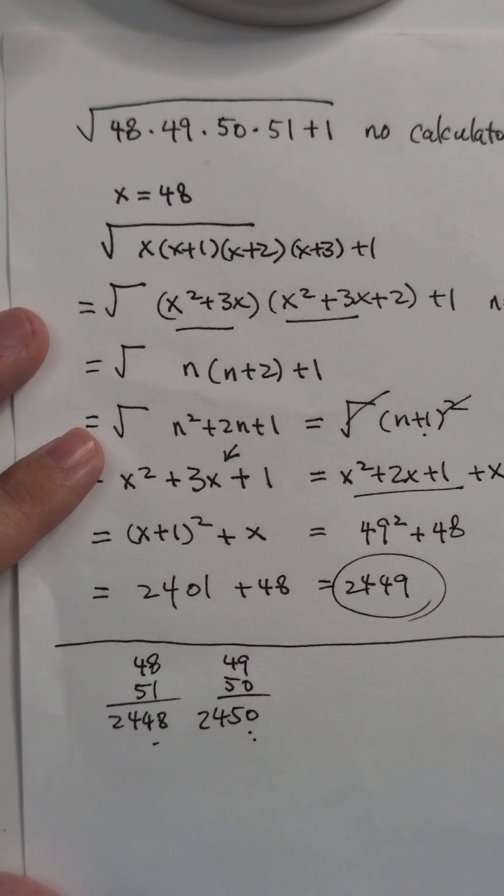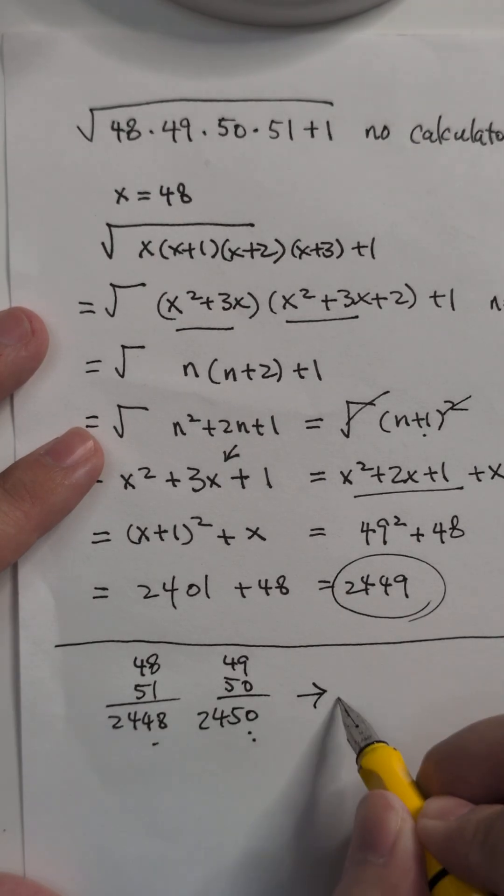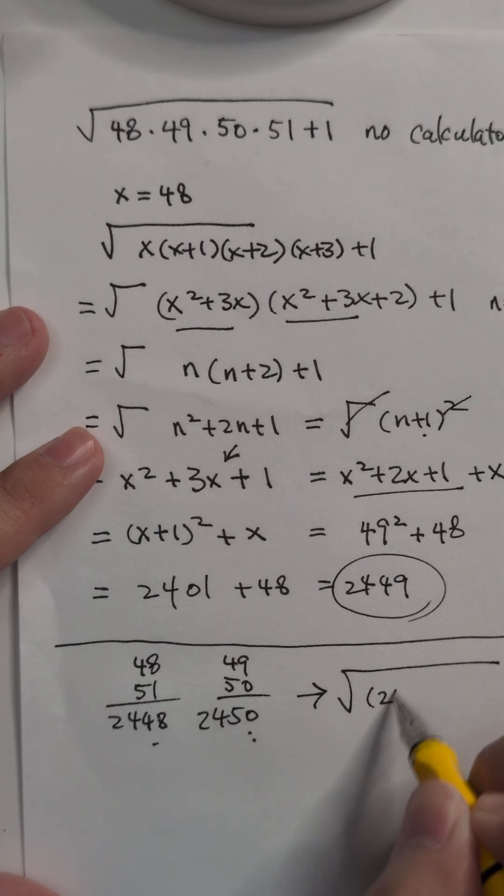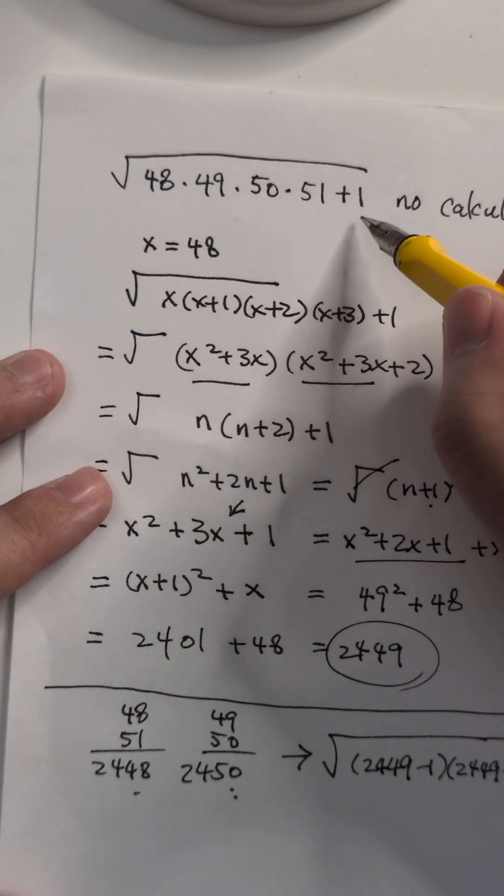What do these two look like? This actually looks like square root of (2449 minus 1) times (2449 plus 1), and plus 1 in the end. That was the original question, right?